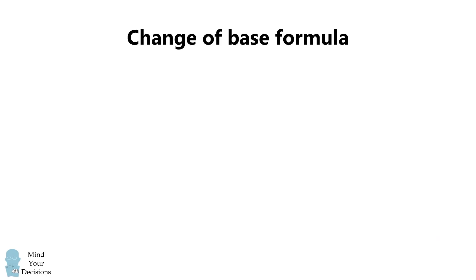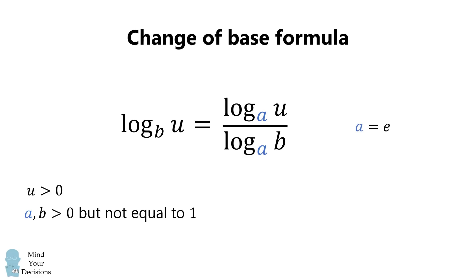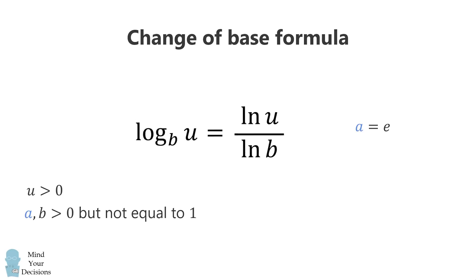Recall the change of base formula. Log base B of U is equal to log base A of U divided by log base A of B. This is for numbers that are greater than 0, and the bases A and B are not equal to 1. Suppose A is equal to the constant E — the logarithm then becomes the natural logarithm, and that's the form of the formula I'll use in the video.